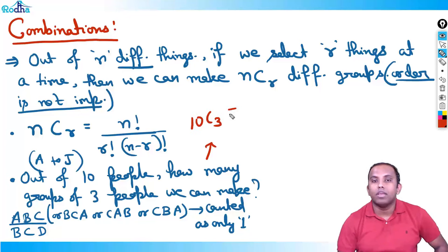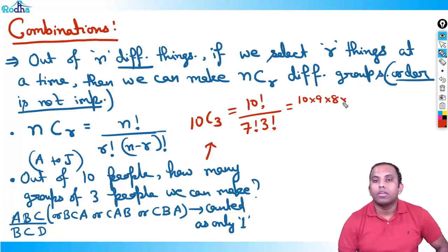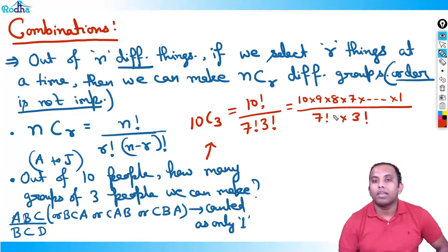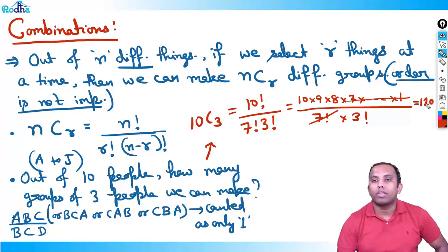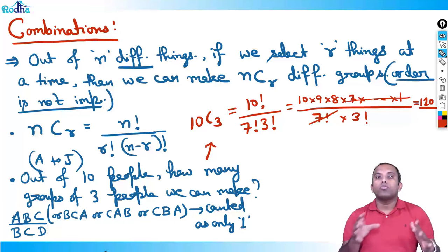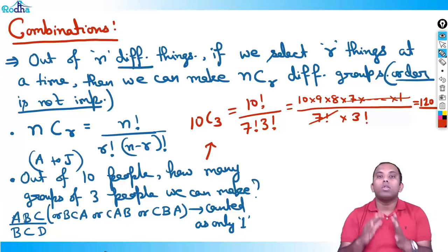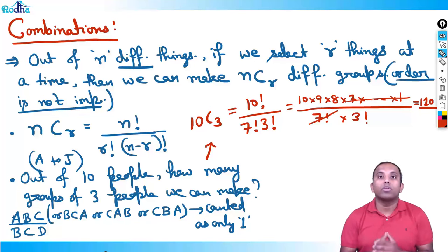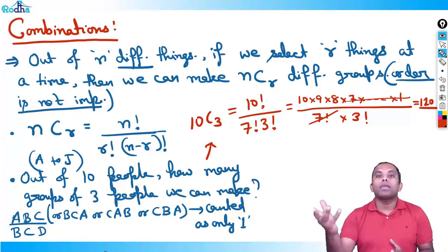What is 10C3? Applying the formula: 10! / (7! × 3!). The 7 factorial cancels, leaving 10 × 9 × 8 / 6 = 120. So out of 10 people, we can make 120 different groups of 3. This is a great shortcut for counting.